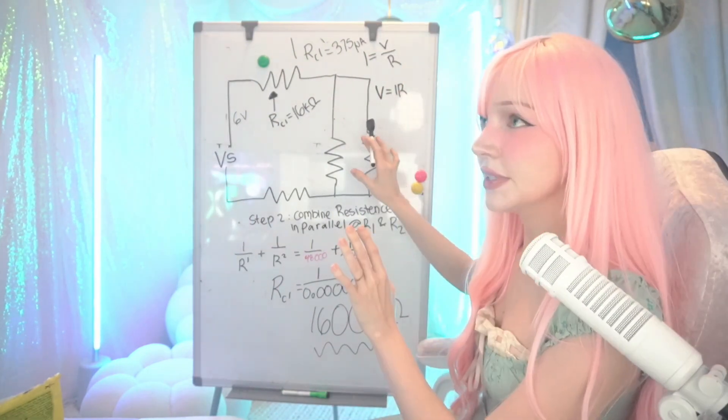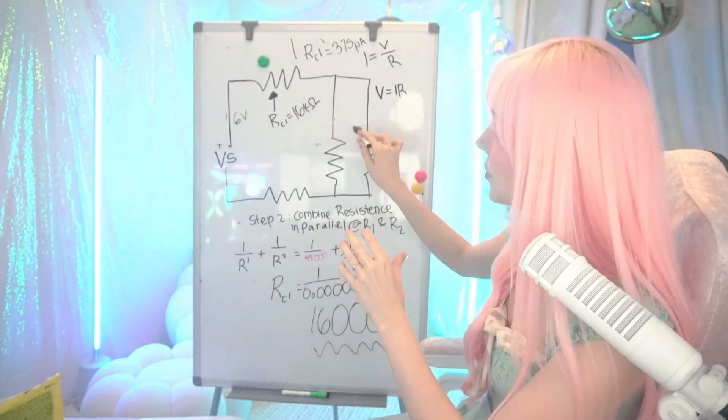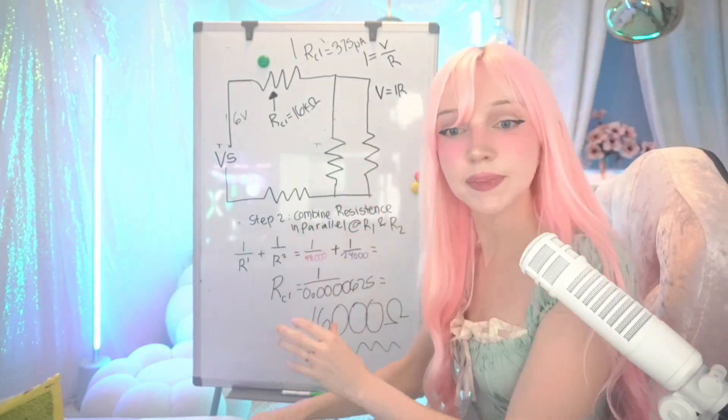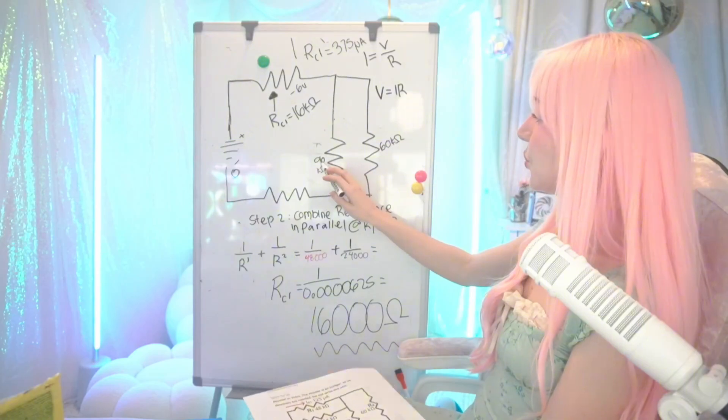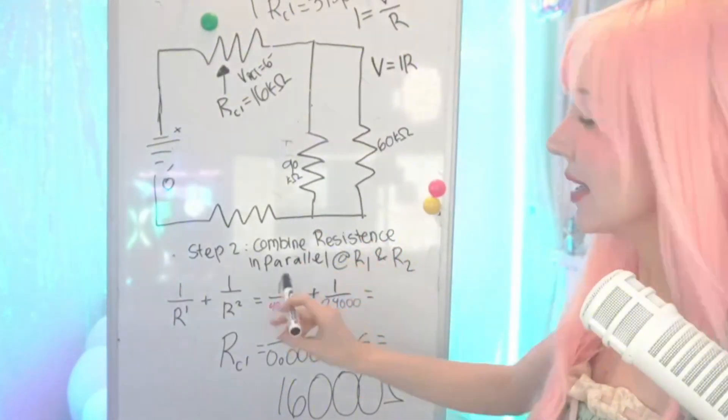We need to combine these guys. Voltage on parallel resistors is the same. Current through resistors in series is the same. We need to combine these ones. So we already did this before, so it's going to be really easy.